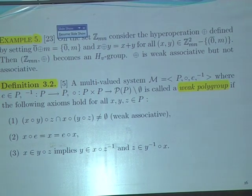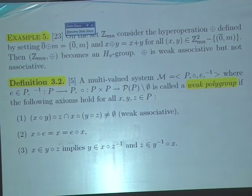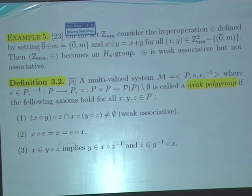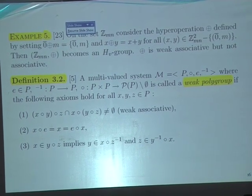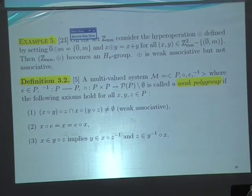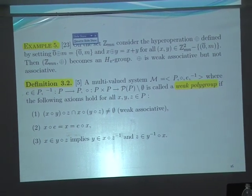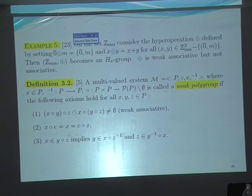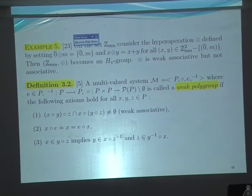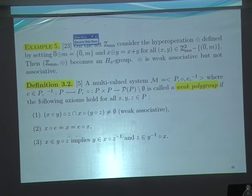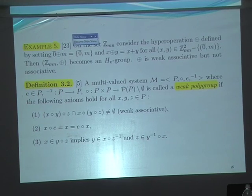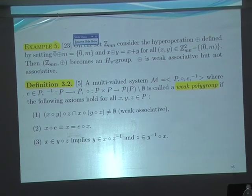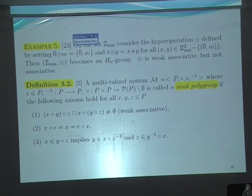The next definition may be more interesting for scientists since we like hyperstructures with units. I call this structure a multi-reality system. We have a set, a hyperoperation, an identity, and a unary map. This structure must satisfy the following axioms.